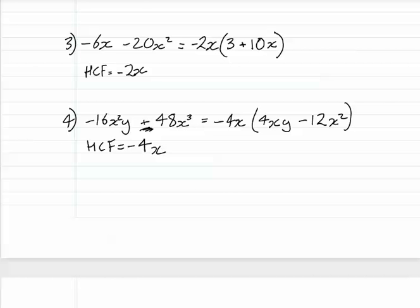It's always a good idea to stop and look at your brackets and think, do I have any common factors remaining in the brackets which would show me that I made a mistake? And of course I do. 4 goes into both of the terms and x goes into both of the terms. My HCF should have been negative 16x squared.